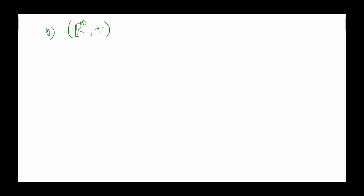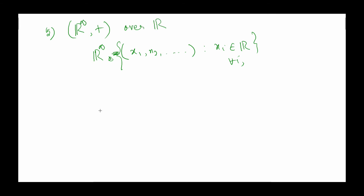One can also say ℝ∞ with the same componentwise addition is a vector space. ℝ∞ is an infinite-dimensional set of sequences (x₁, x₂, ...) that continue indefinitely, where all entries belong to ℝ. This is also a vector space over ℝ.